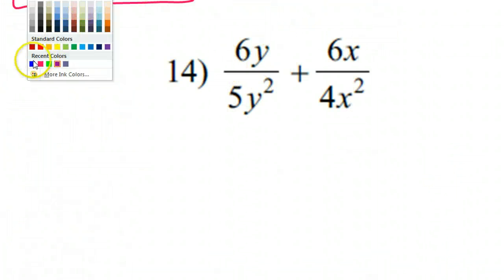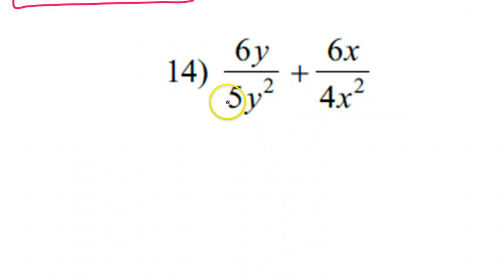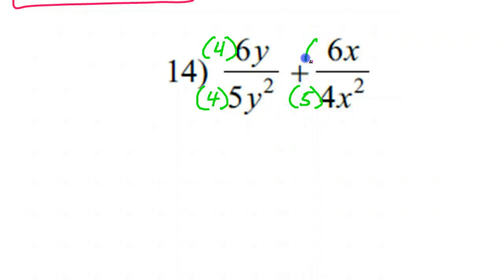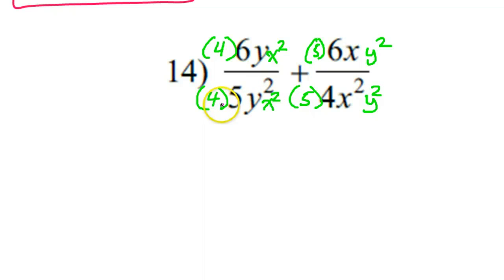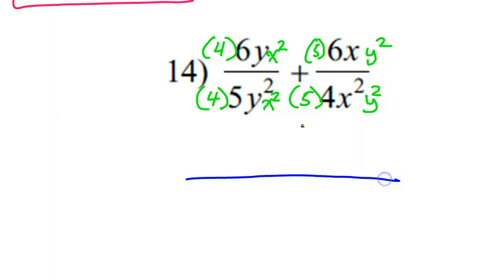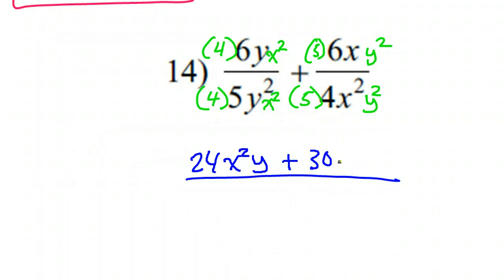Look at number 14. I will multiply this side by 4, and I'll multiply this side by 5. Now they're both 20. But this side has an x squared that this side doesn't have — now they both have x squared. But this side has a y squared. Now they're both essentially 20x squared y squared. Now that I have a like denominator, I can go ahead and add. So here I have 24x squared y, and here I have 30xy squared, over the common denominator of 20x squared y squared.